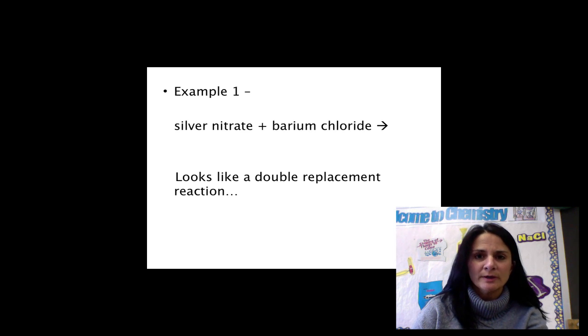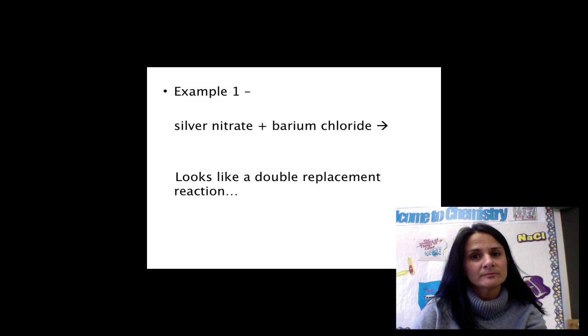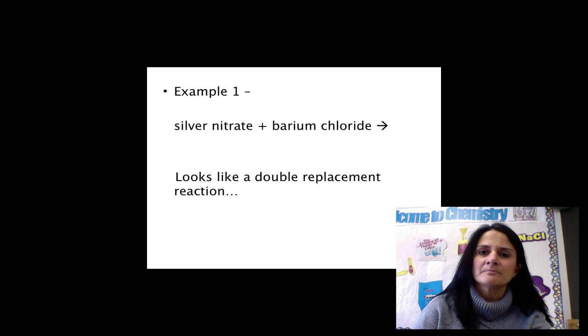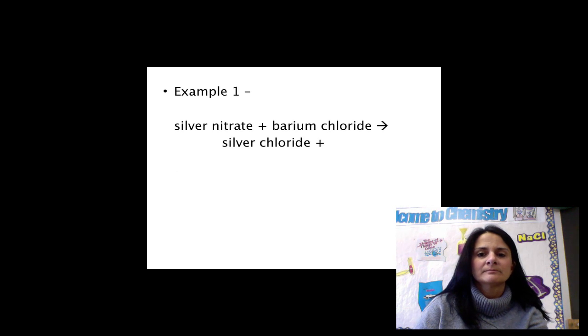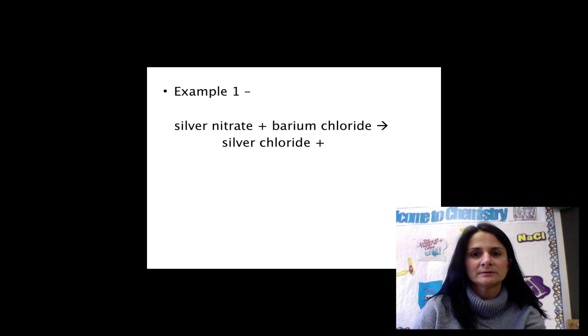So silver, the boy, is dancing with nitrate, the girl. Likewise, barium, the boy from the second couple, is dancing with the girl, chloride. When they switch partners, silver will now be dancing with chloride. Barium will now be dancing with nitrate.